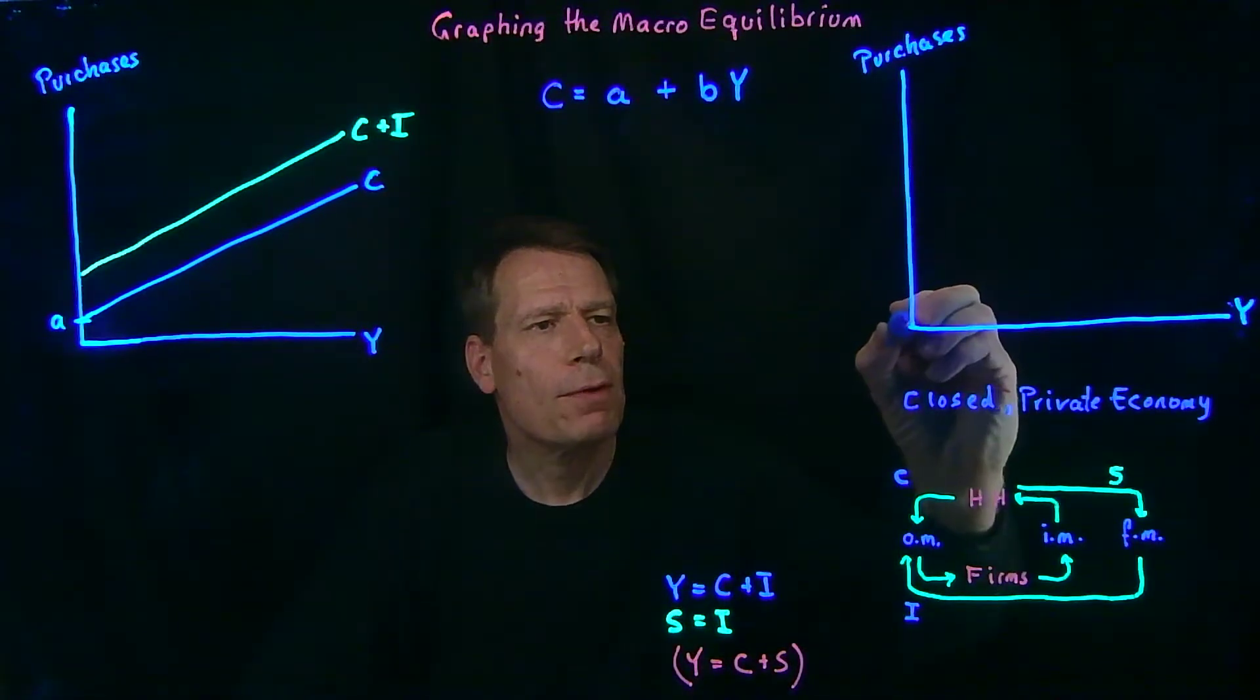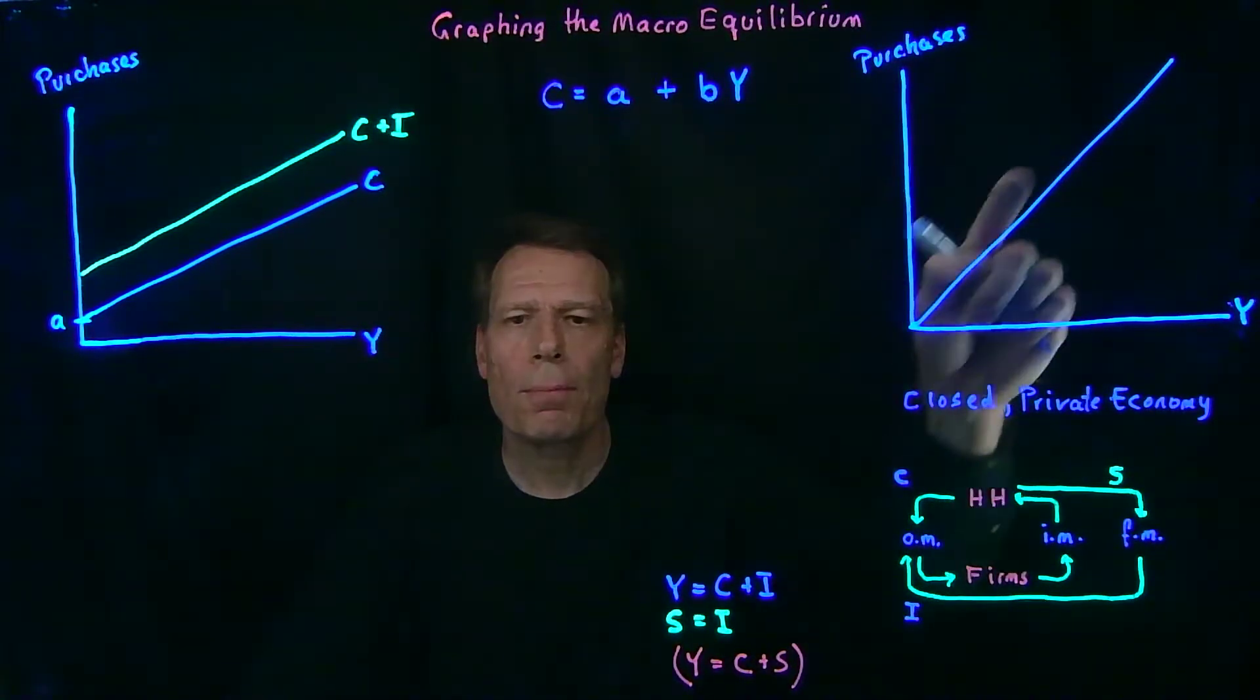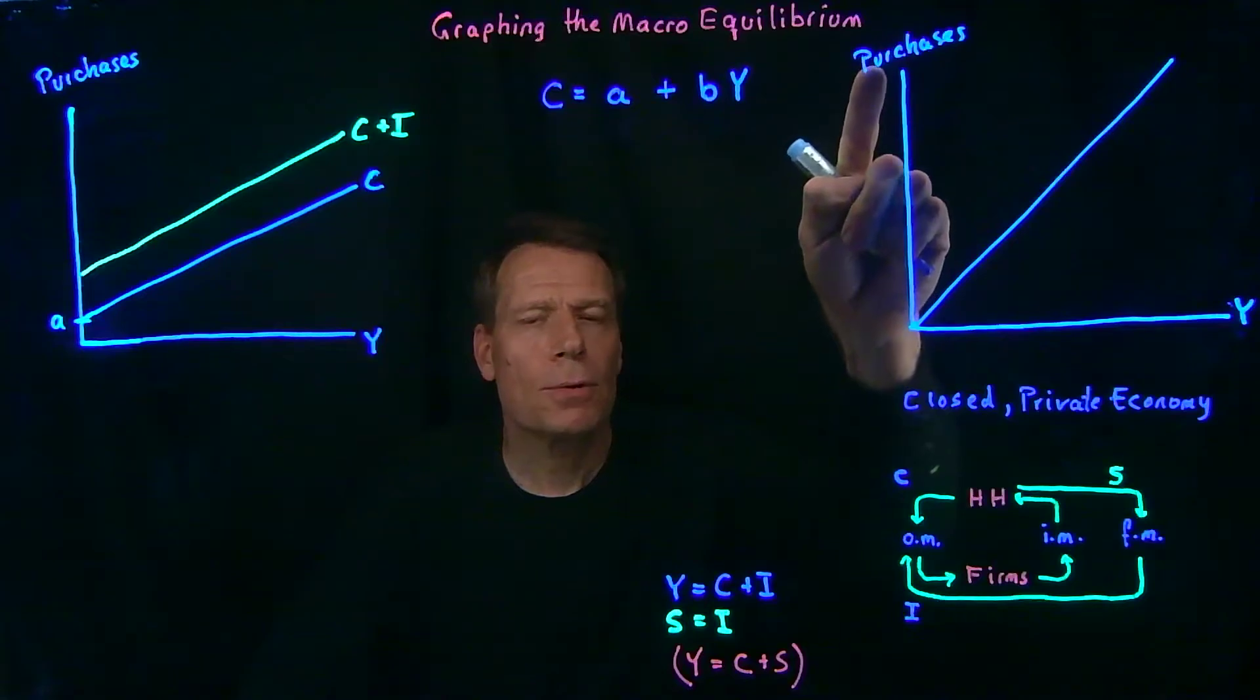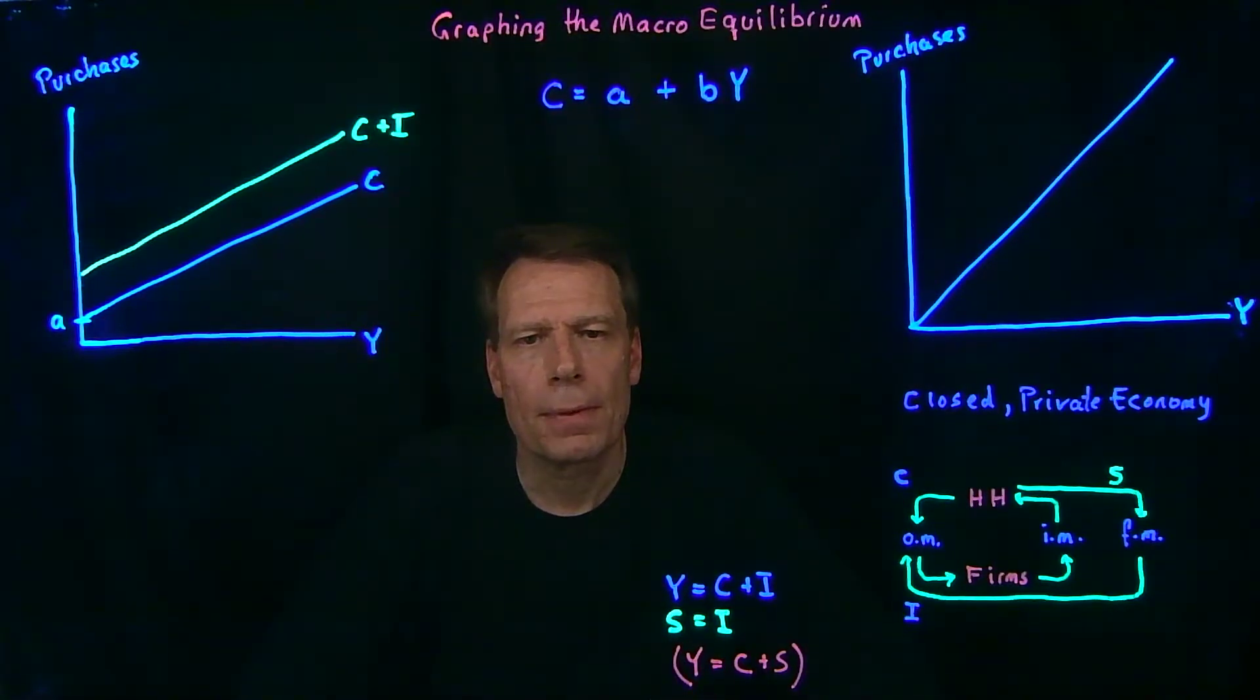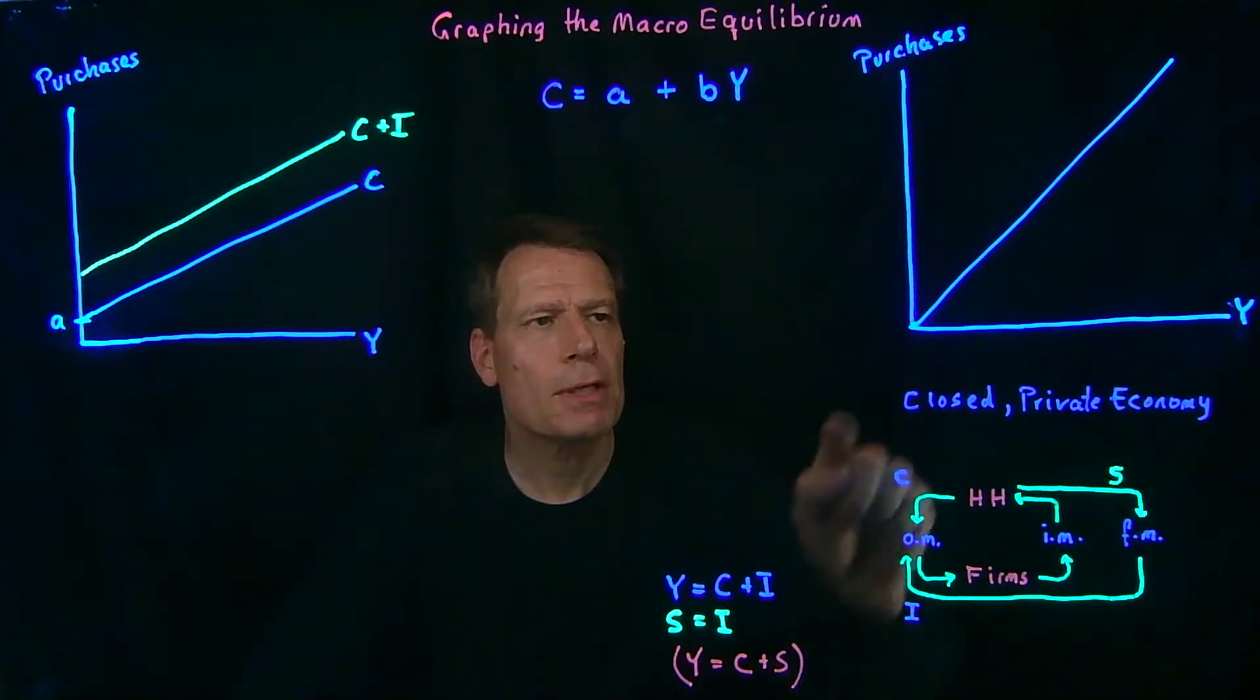So if I put a 45 degree line into this picture, that line contains all the points where Y is equal to purchases. So now we have an equation that represents that equilibrium equation. Any equilibrium in this economy is going to have to lie on that 45 degree line.